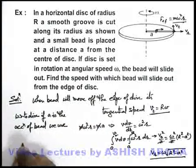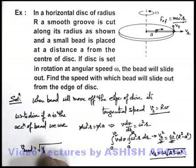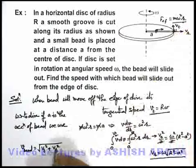So we can easily get the velocity of bead when it is coming out is root of vt square plus vr square, because both of these velocities are normal to each other we just use the vector sum.